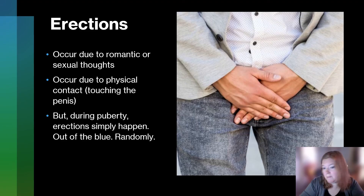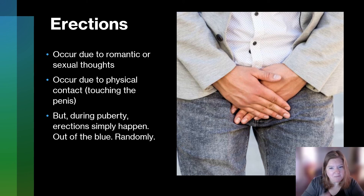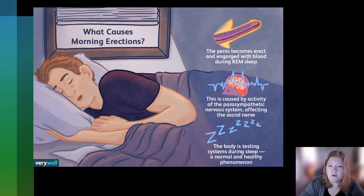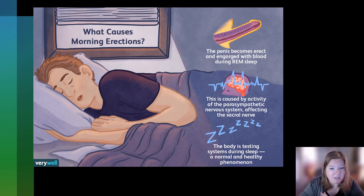Erections occur due to romantic or sexual thoughts, often due to physical contact such as touching the penis or the inner thigh. But during puberty, erections simply happen out of the blue, randomly. Sometimes trying to think about something that is not sexually arousing can help to mitigate and lessen that erection. There are also morning erections — the penis becomes erect and engorged with blood during REM sleep. The parasympathetic nervous system is activated, which is why an erection happens. The body is essentially testing the process — normal and healthy. If this happens, it's just your body testing that everything is working.